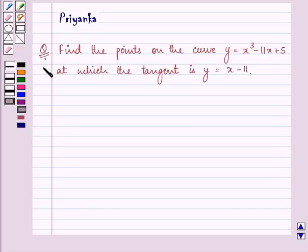Hello and how are you all today? The question says, find the points on the curve y equals x cube minus 11x plus 5 at which the tangent is y equals x minus 11.